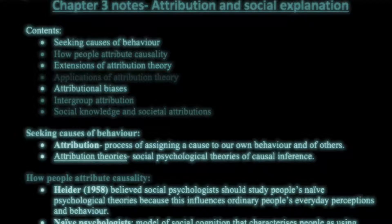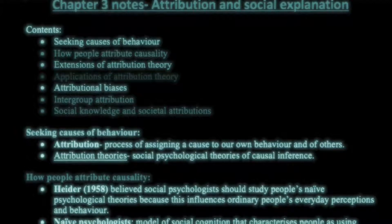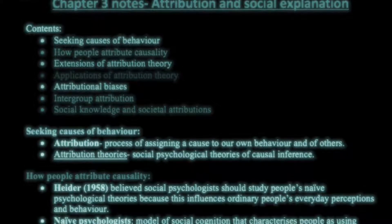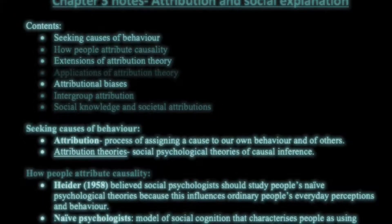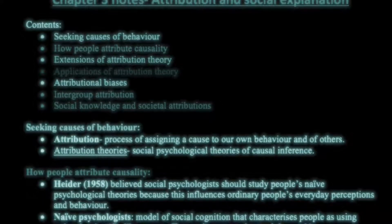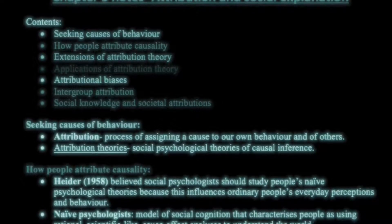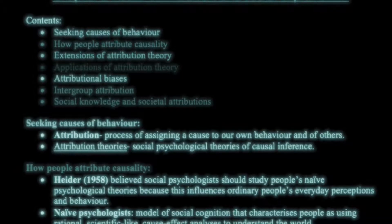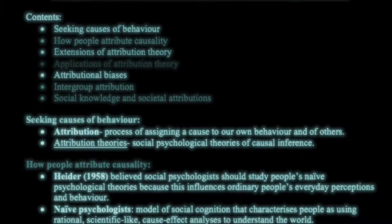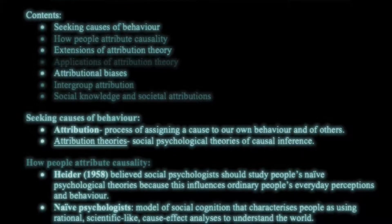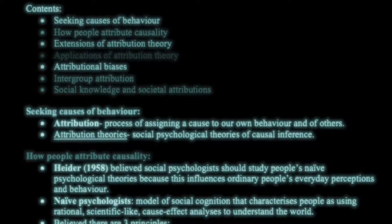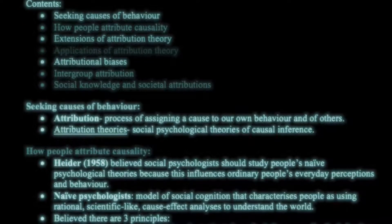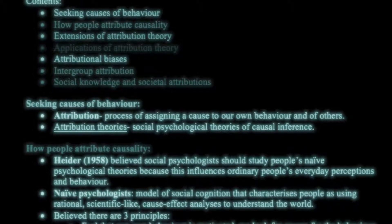This is a quick summary of chapter three notes about attribution and social explanation, derived from Social Psychology, the eighth edition by Vagon and Hogg. Topics covered include seeking causes of behavior, how people attribute causality, extensions of attributional theory, applications of attributional theory, attributional biases, intergroup attributions, and social knowledge and societal attributions.